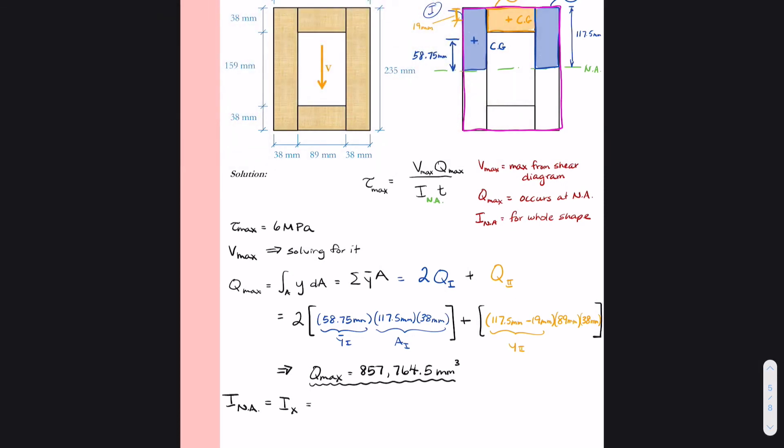And then I have an inner rectangle, the hole, that I've outlined in green. So to find the moment of inertia for the entire shape, I could take the moment of inertia for the pink rectangle and subtract out the moment of inertia for the green rectangle.